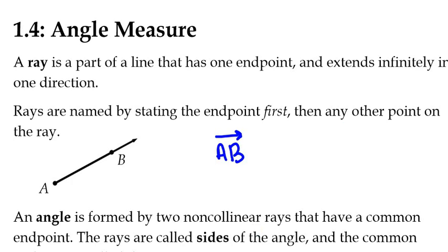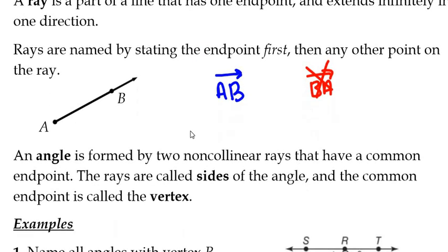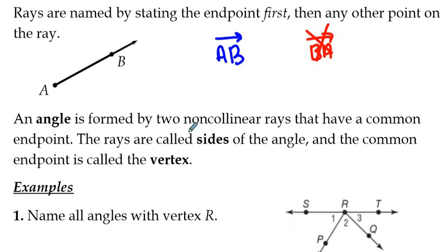This tells us that we have a ray that has endpoint A and extends in the direction of B. I will not accept if I ask you to name this ray, I will not accept that as an answer. No matter how hard you try. So now that we know what a ray is, we could learn what an angle is.